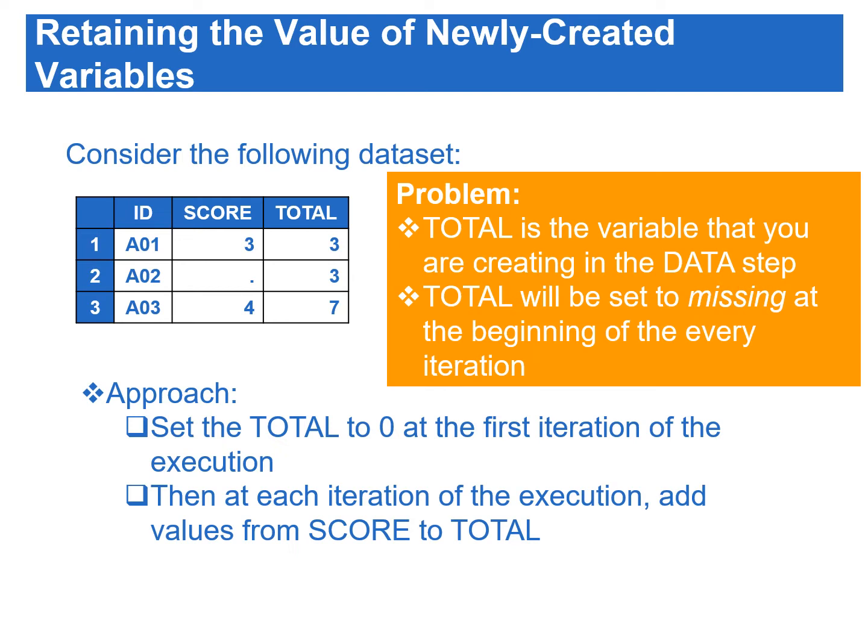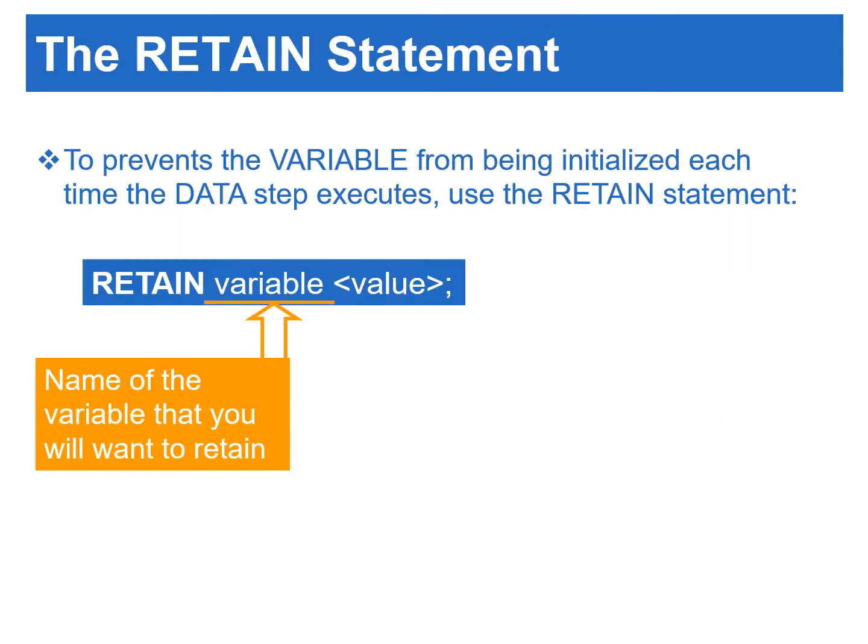Since total is a new variable that we want to create, total will be set to missing in the PDV at the beginning of every iteration of the execution. Thus, to accumulate the total variable, we need to retain the value of total at the beginning of each iteration of the execution. In this situation, we need to use the retain statement.